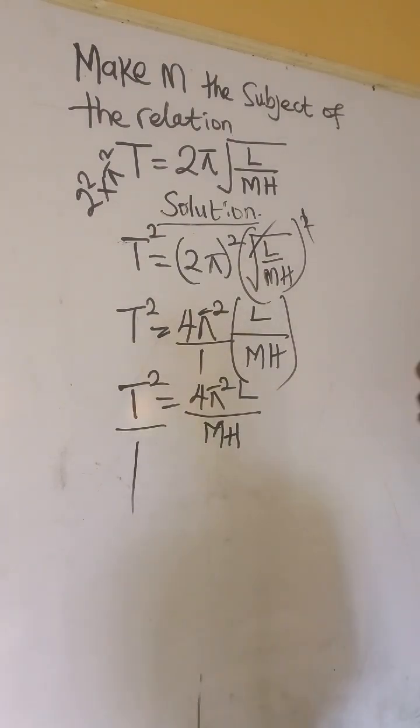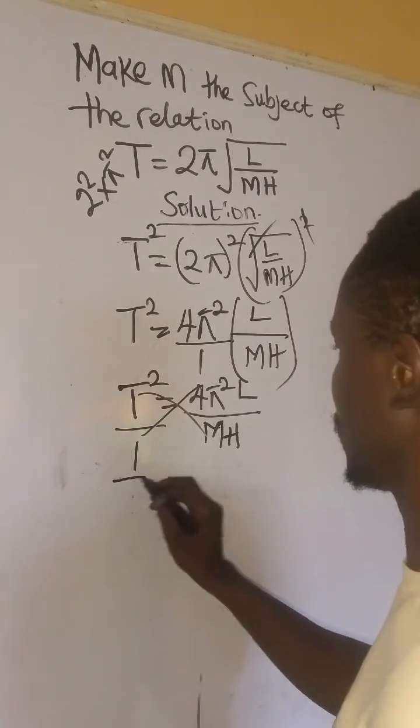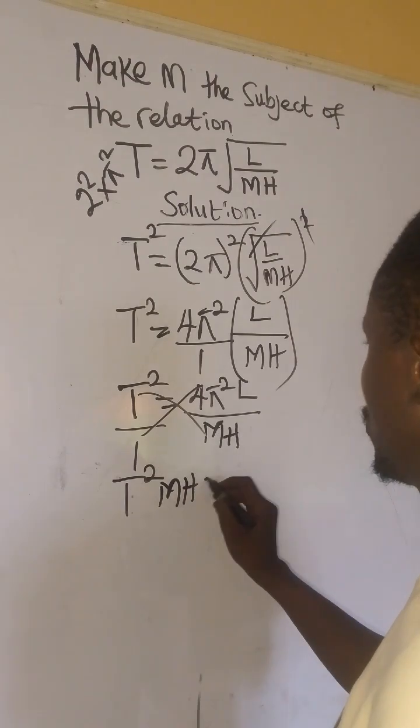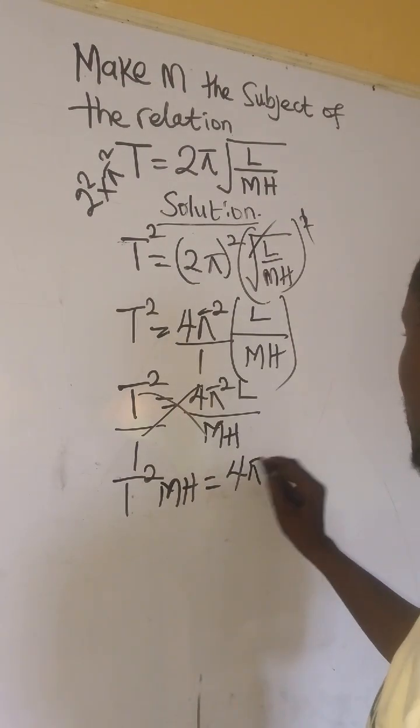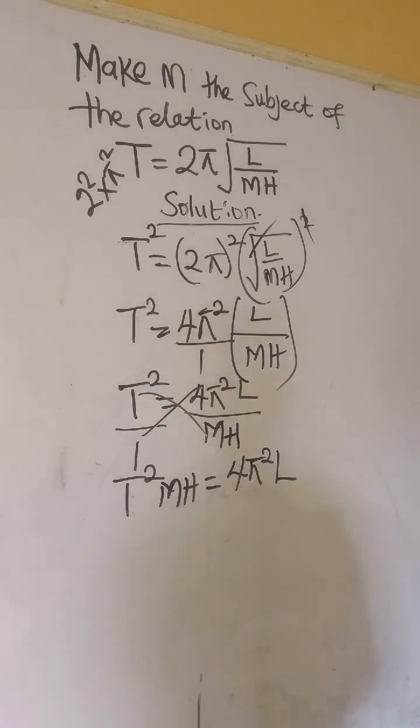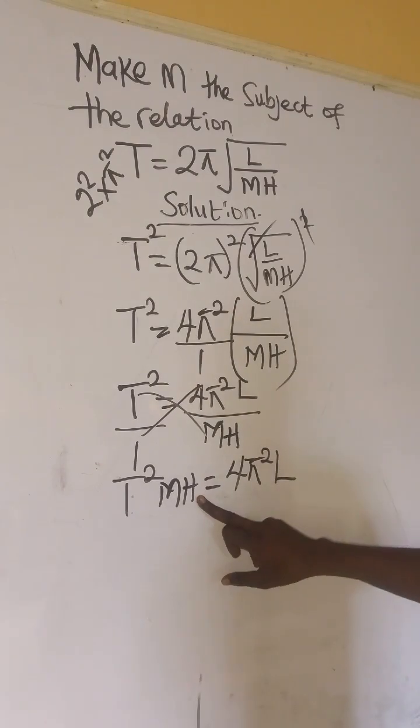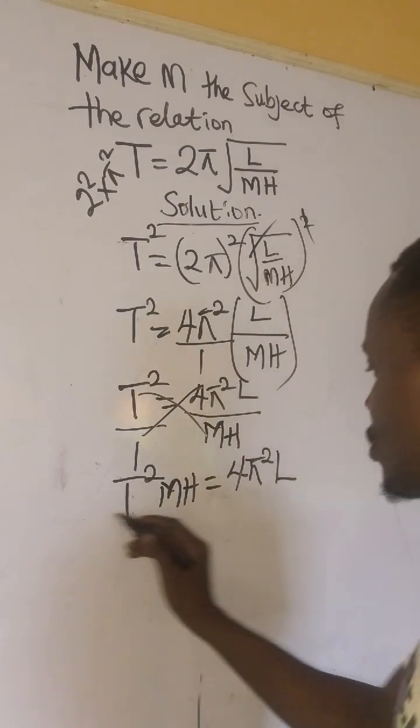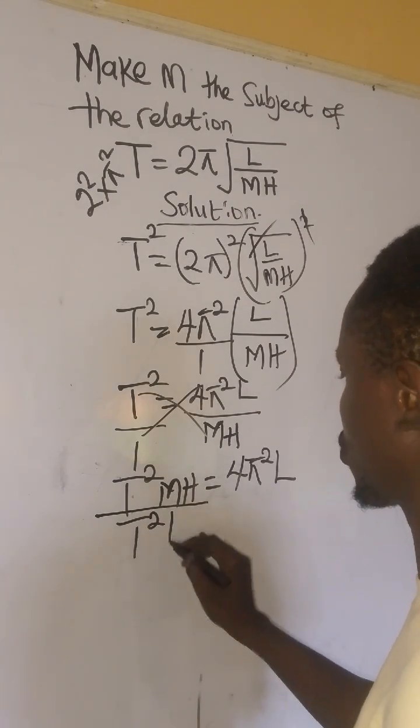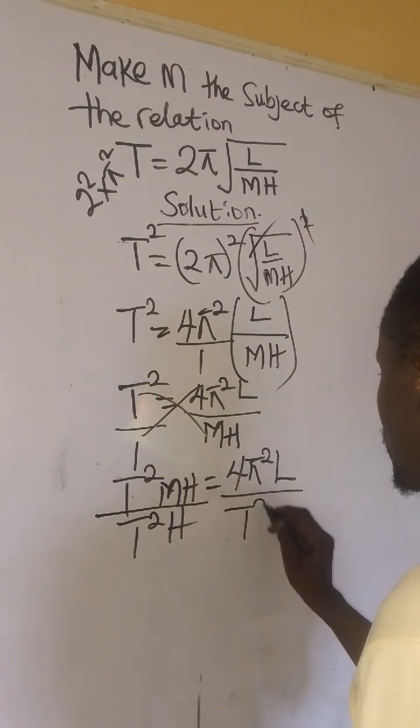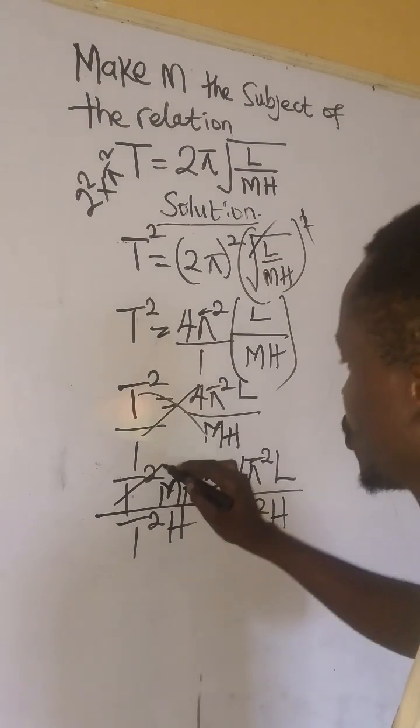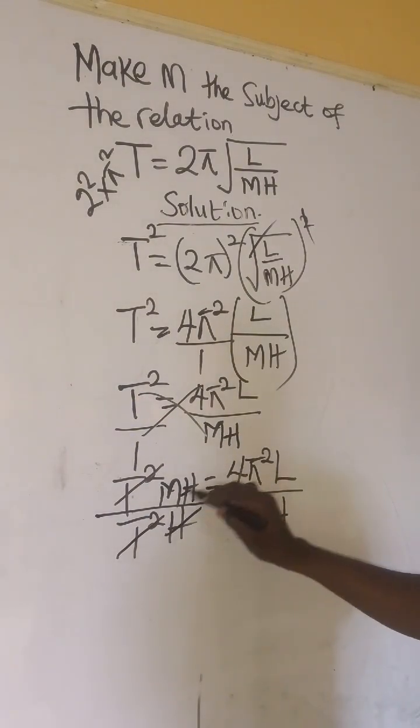So what we do next is cross multiply. We now have T²mh = 4π²l. Now m is what we're looking for, so T²h becomes a coefficient. We divide both sides by T²h. T² cancels T² and h cancels h.